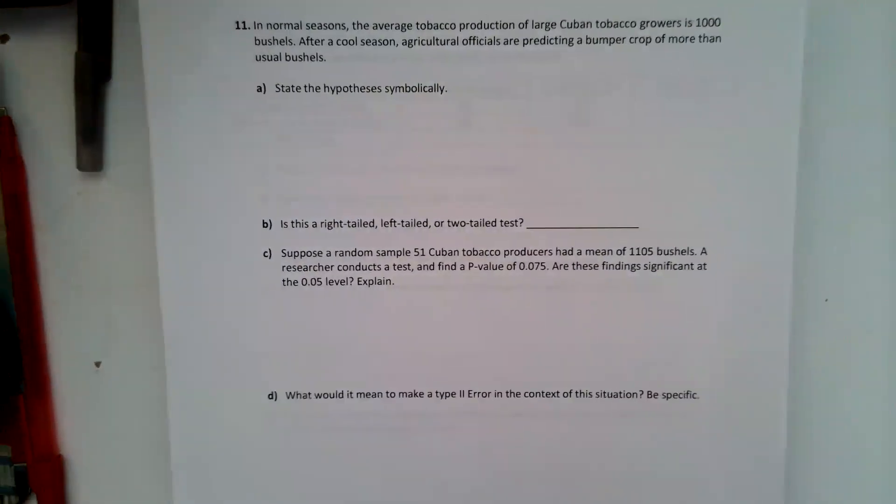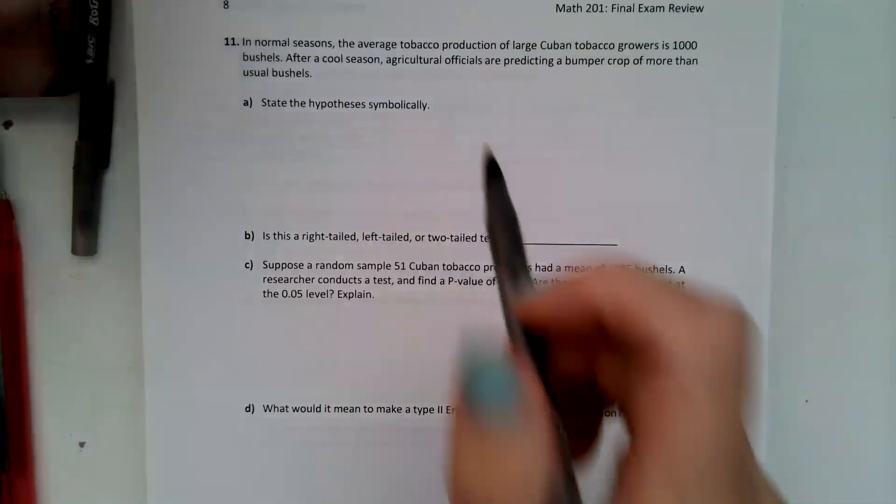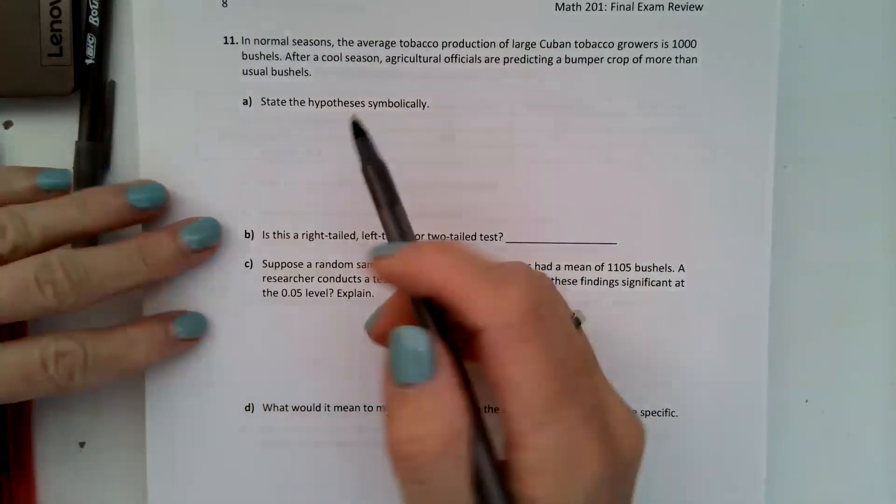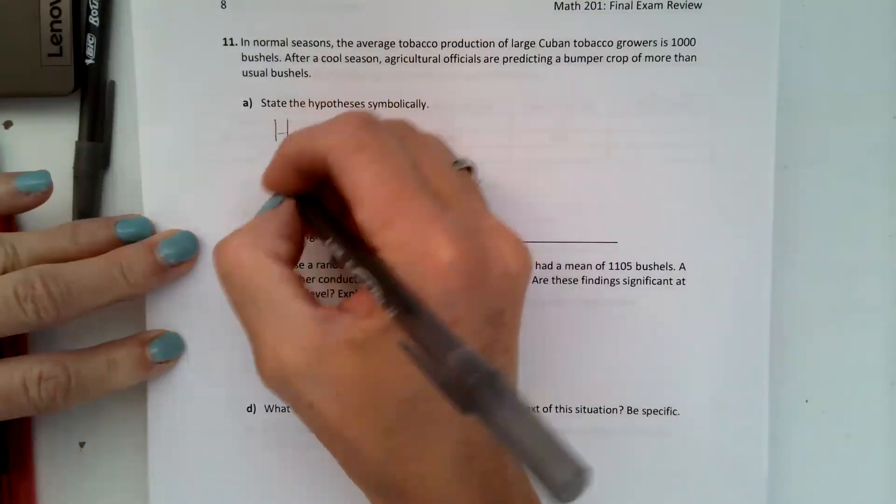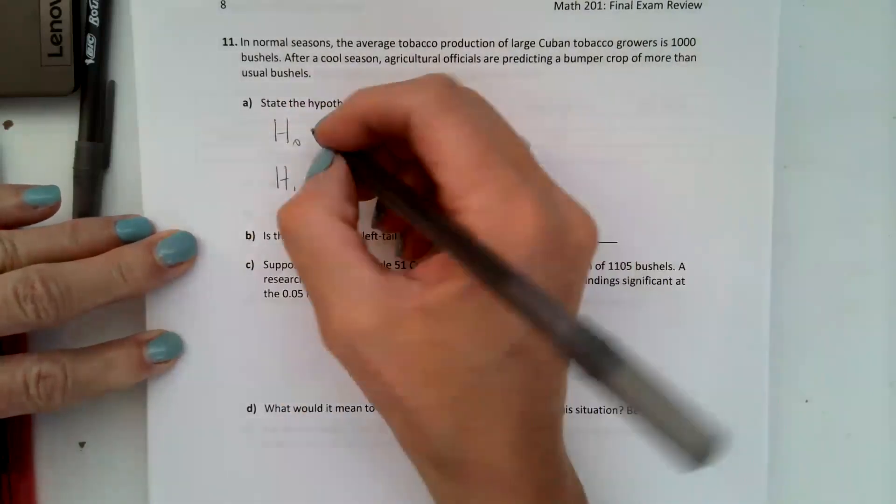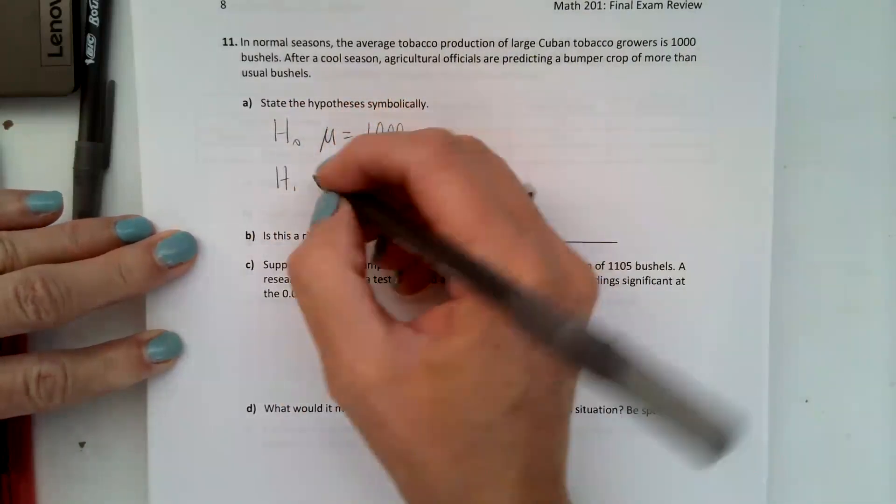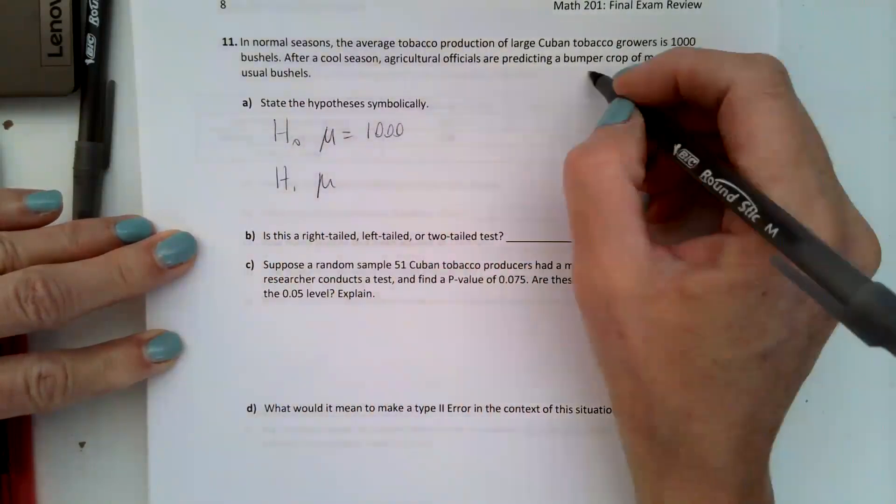Question 11 says in normal seasons an average tobacco production of large Cuban tobacco growers is 1000 bushels. After a cool season agricultural officials are predicting a bumper crop of more than usual bushels. State the hypothesis symbolically. So it's a one sample mean and this is what they usually think it is. So we think the mean is equal to 1000, but they're proposing after cool season they're predicting a bumper crop of more than usual. So we're thinking it's going to go up with cooler weather.